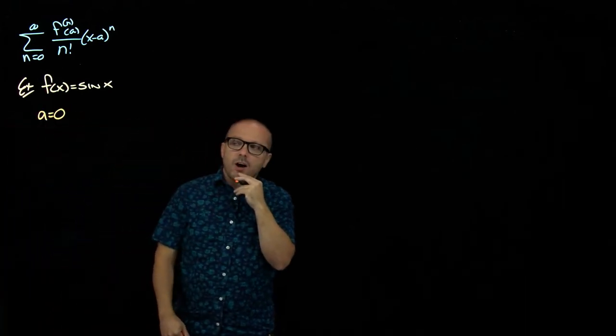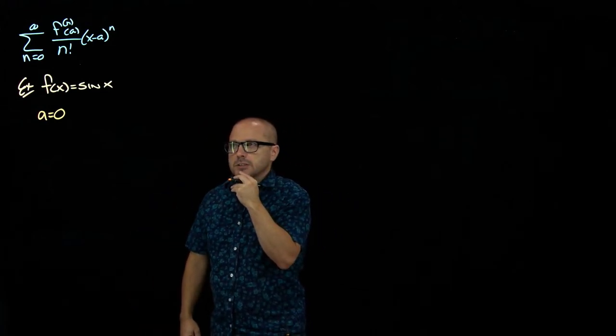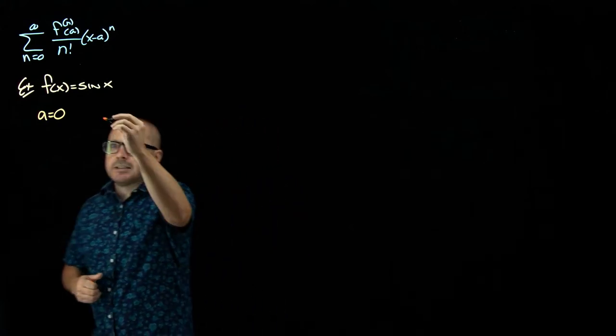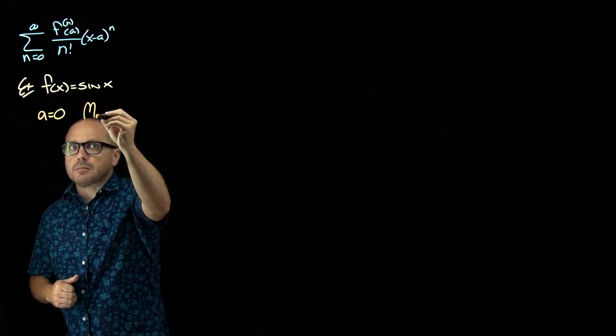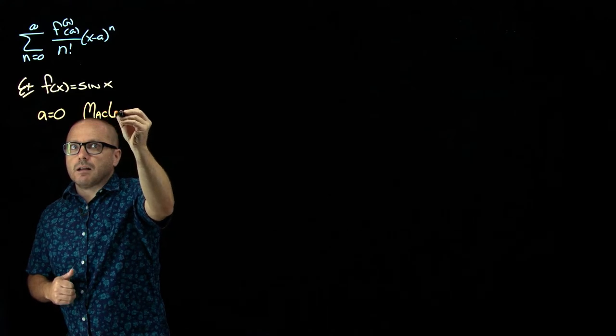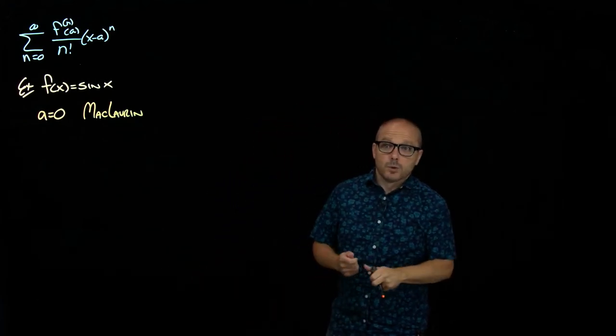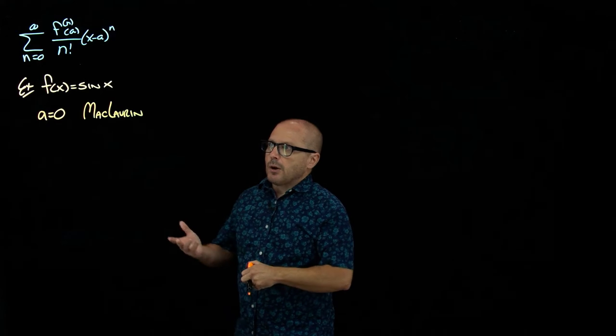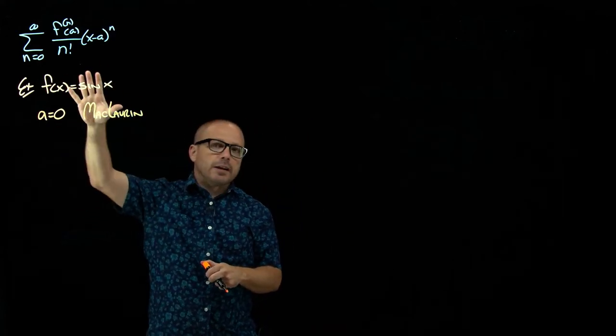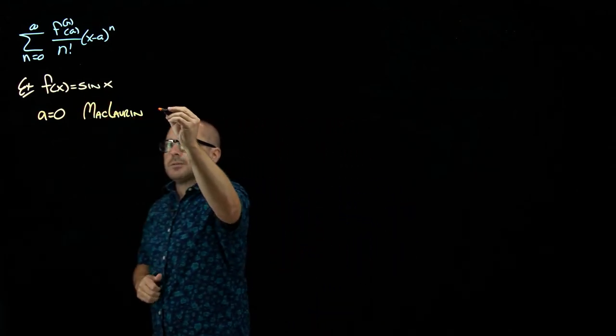So we'll use a equals zero like we did with e to the x as well. Now, we'll see that often a equals zero is a good choice, not for all functions, but for a lot of functions. And Taylor series that are centered at zero, we give them a special name, Maclaurin series, named after a mathematician Maclaurin who did a lot of work with Taylor series early on. So if you are asked for a Maclaurin series, really all they're saying is find a Taylor series centered at zero. That's all that means.